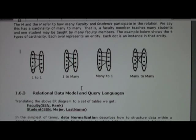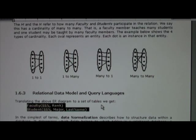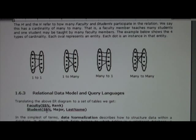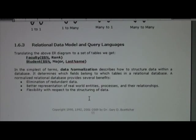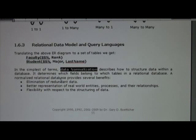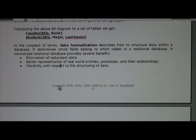We want to map this to a relational database or relational data model. From the example above, faculty and students — notice that the SSN is underlined to represent that it is the key of the relationship. When we go about doing this design, one concern is structuring the database. The term for structuring data in terms of records and tables is called data normalization. We do this to eliminate redundant data, for better representation, and for flexibility.